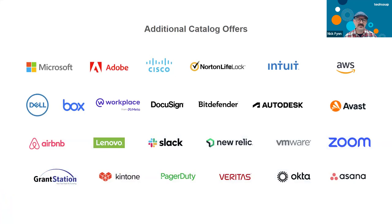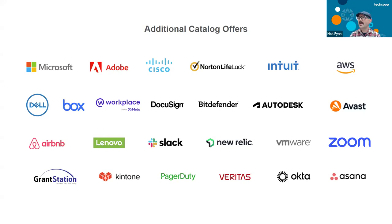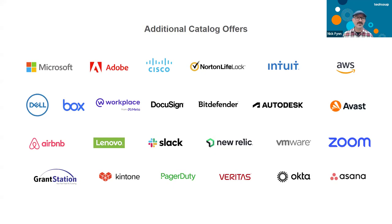We have a ton of other brands in the TechSoup catalog — not just those three. The broad swath of offers includes Cisco for networking, Autodesk for CAD and design (which some arts organizations sometimes use), and GrantStation, which provides a product that helps nonprofits look for grant funding opportunities online. We actually do a special promo with GrantStation twice a year — it's always a great bellwether for how nonprofits are feeling.